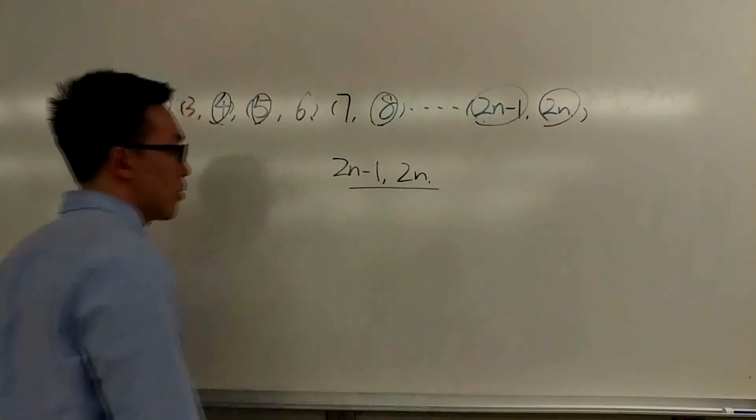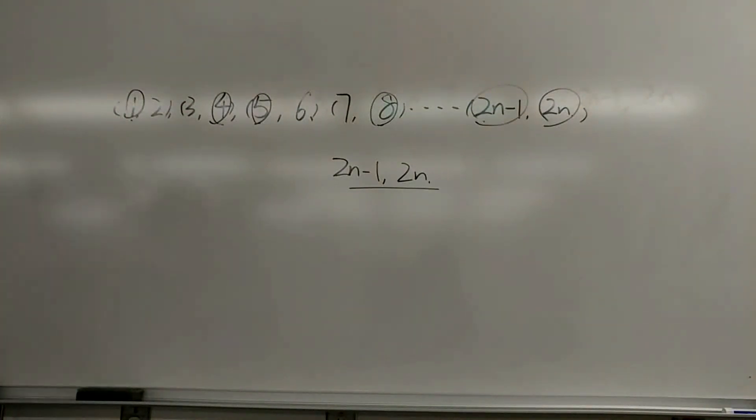If we pick N plus one integers from N pairs, we must pick both integers from one of these pairs. This step, we use the pigeonhole principle.